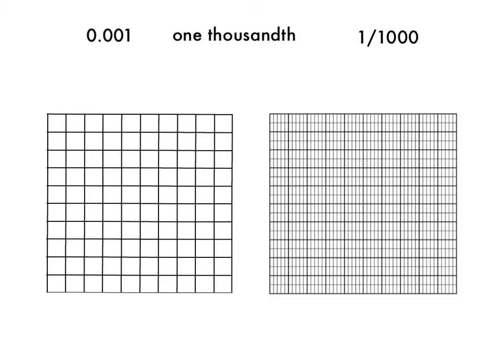Now here's something new. This decimal is one-thousandth, and it's also the same as the fraction one-thousandth. This grid here shows one-thousand equal size pieces. Each of those teeny-tiny little pieces is equal to one-thousandth. I know that because there are ten squares and ten squares, so there's a hundred of those squares, and then in each of those squares I can see that there are ten little rectangles. Ten times a hundred equals one-thousand.